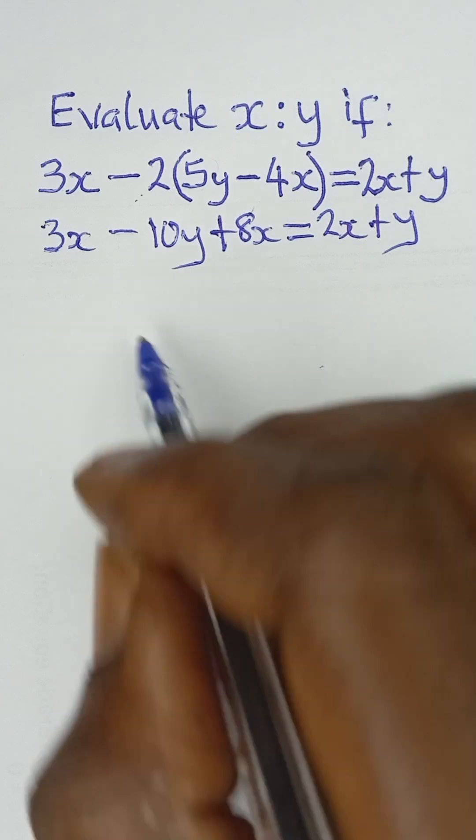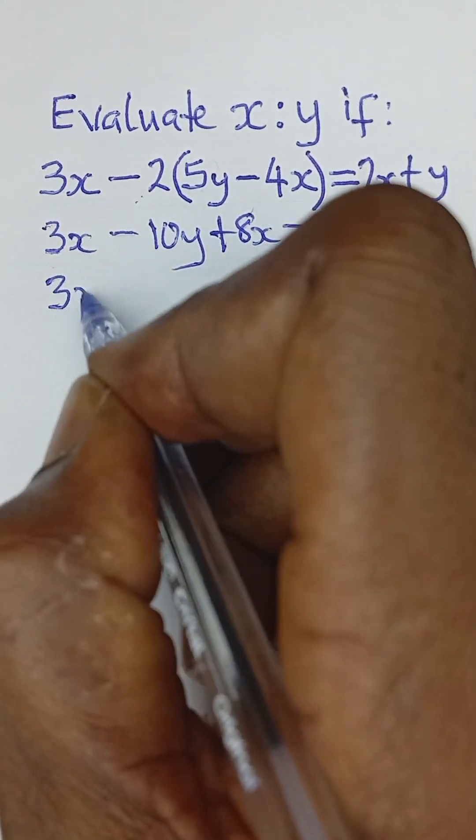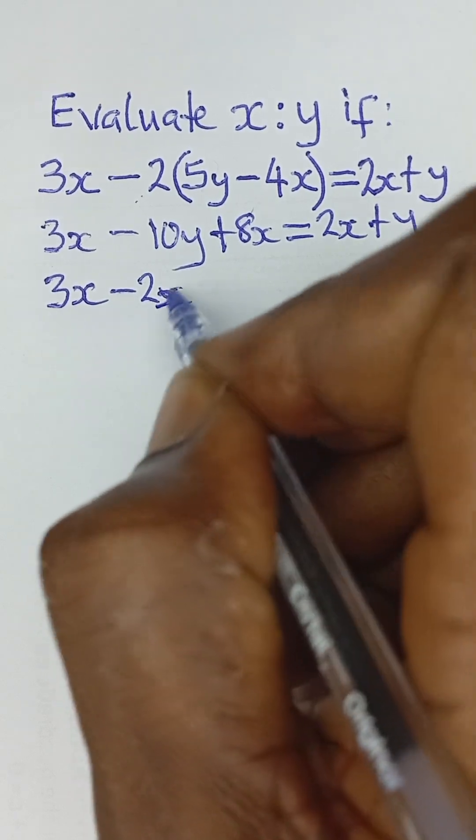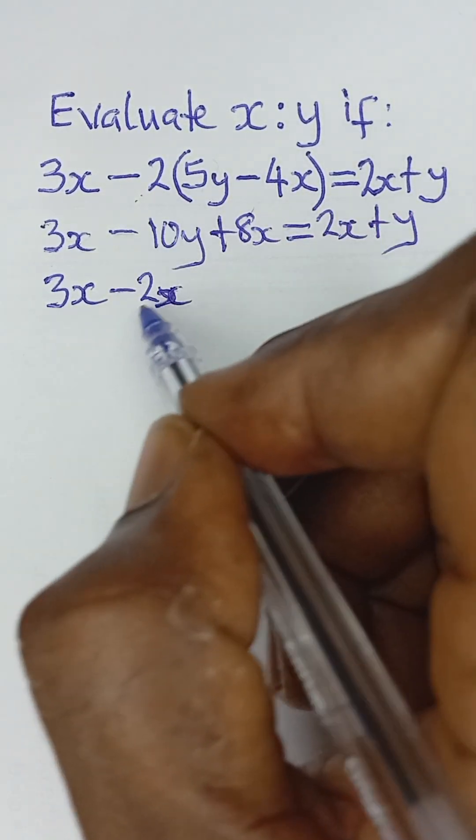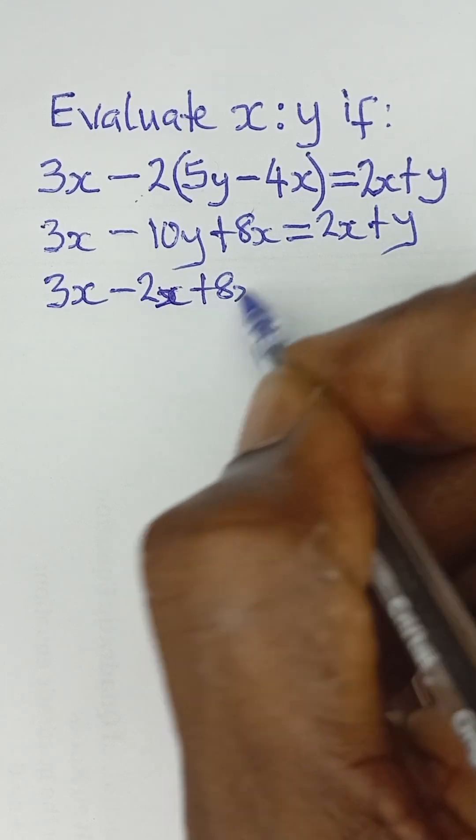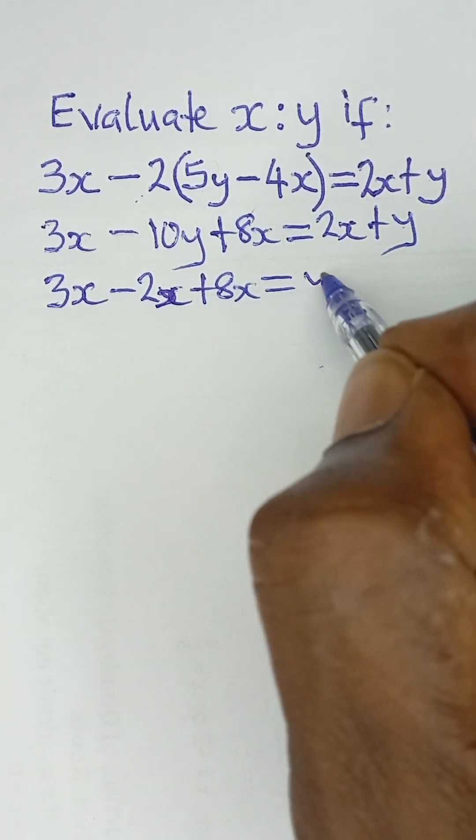Now collecting terms in x, I have 3x minus 2x when this positive 2x comes to that side becomes negative 2x, and I have positive 8x on this side, and that will be equal to positive y on this side.